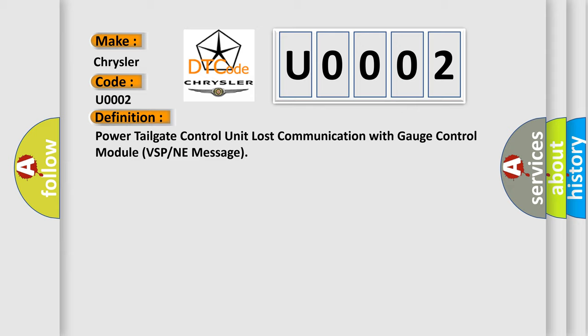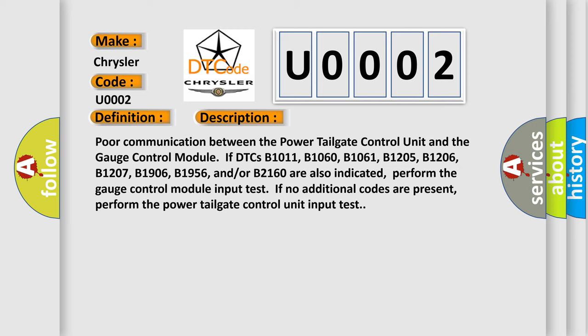Here is a short description of this DTC code. Poor communication between the power tailgate control unit and the gauge control module if DTCs B1011, B1060, B1061, B1205, B1206, B1207, B1906, B1956, and/or B2160 are also indicated — perform the gauge control module input test. If no additional codes are present, perform the power tailgate control unit input test.